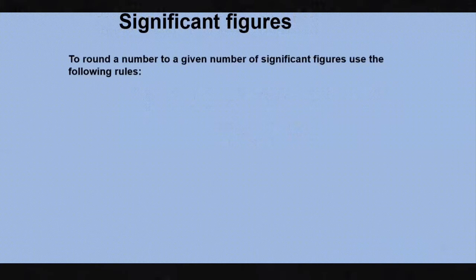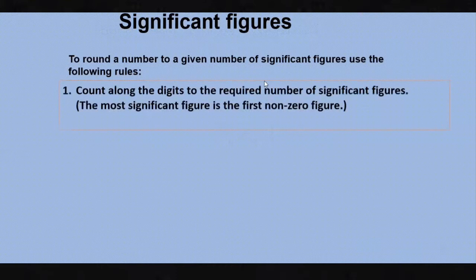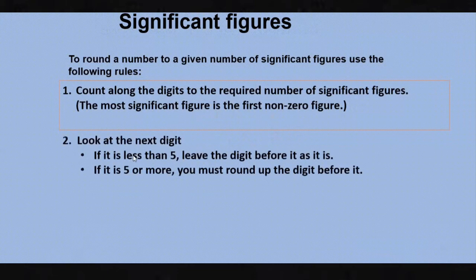To round a number to a given number of significant figures, we use these rules. First, count along the digits to the required number of significant figures. The most significant figure is the first non-zero digit, so all non-zero figures are significant. Second, if the next digit is less than five, we leave the digit before it as it is.